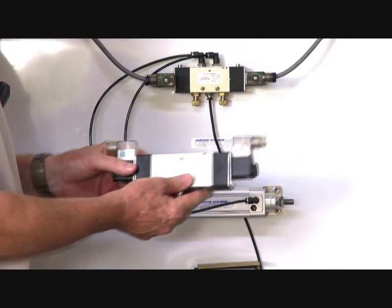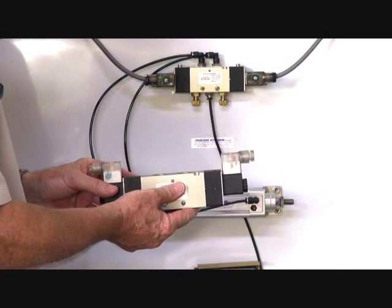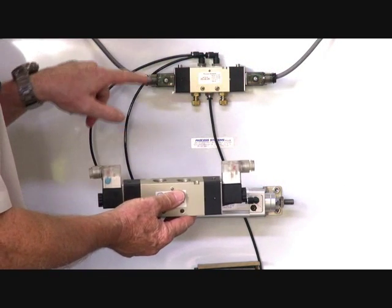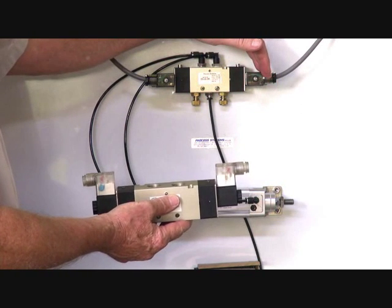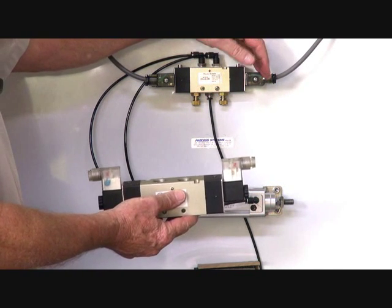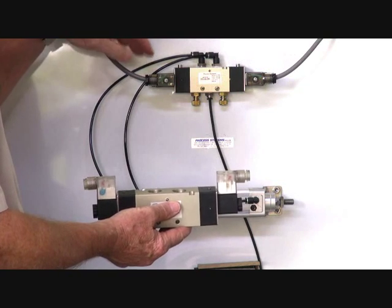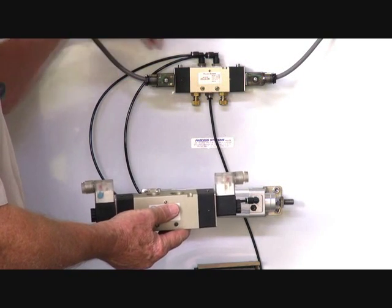It's a bi-stable valve, so you can have an electrical signal on one end or the other, and it'll hold it. Take the power off, it'll stay in that position. There's no spring in this valve. In the reverse situation, you put the pulse on the other end to switch it back again.